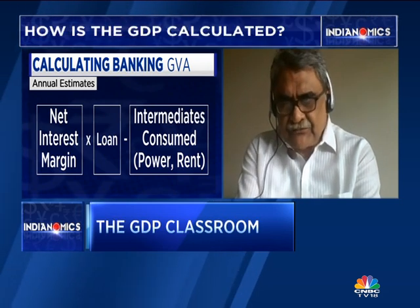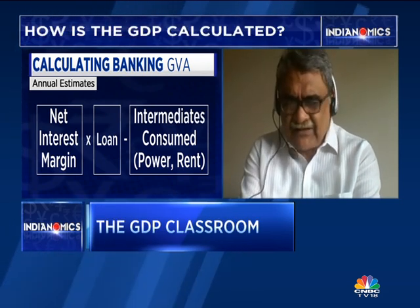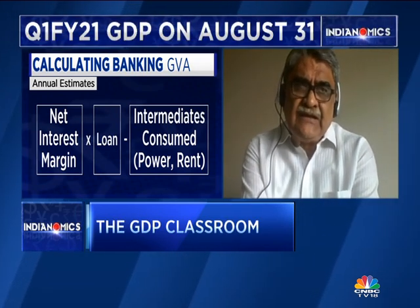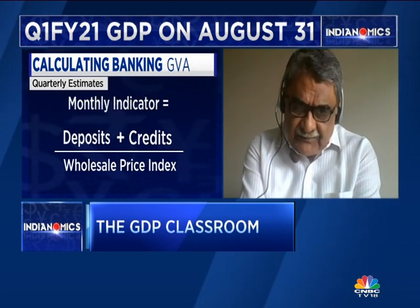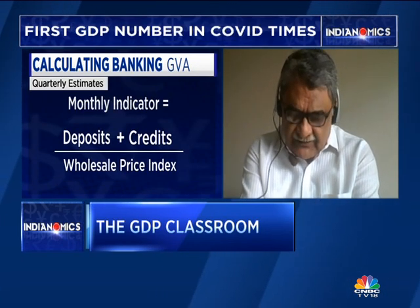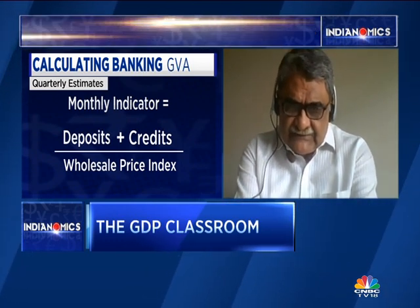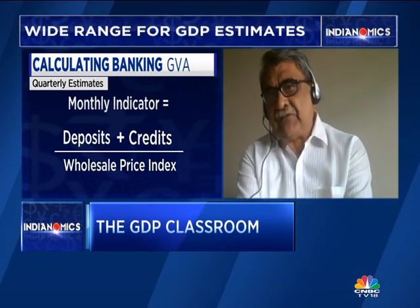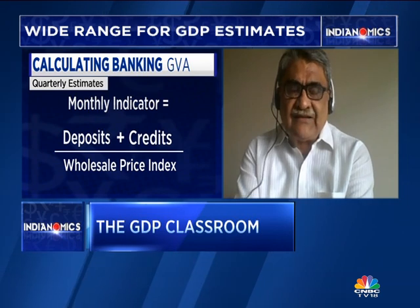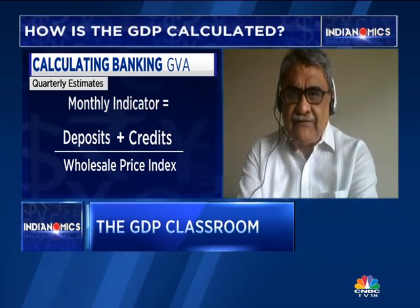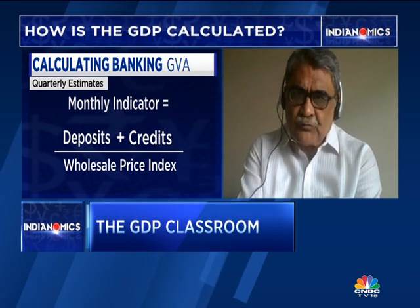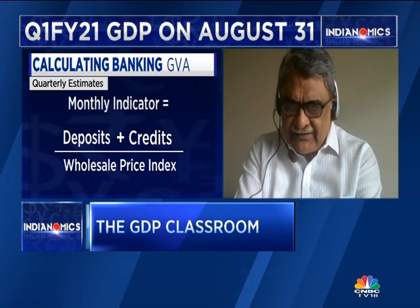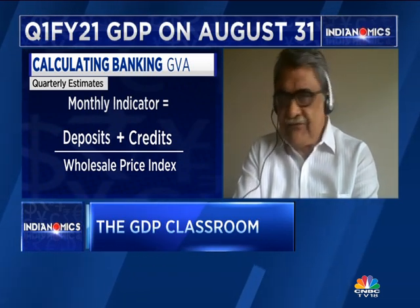That is the main source of bank income, apart from fees paid for drafts and other things. For this intermediation service, annual estimates are computed based on current data available from the RBI and other sources. What is the average amount of deposit? What is the average amount of credit? The respective interest rates are applied, and the margin gives the output of the bank. From the output, you deduct the so-called intermediate consumption to get GVA.